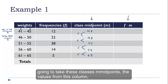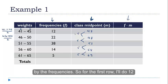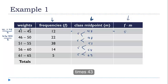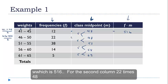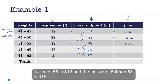Alright, so what I'm going to do next is I'm going to take these class midpoints, the values from this column, and I'm going to multiply them by the frequencies. So for this first row, I'll do 12 times 43, that's 516. For the second column, 22 times 48 is 1056. 38 times 53, that's 2014. 14 times 58, that's 812. And the last one, 5 times 63 is 315.